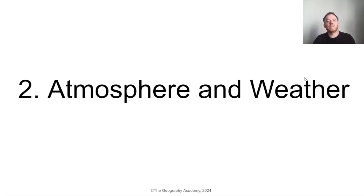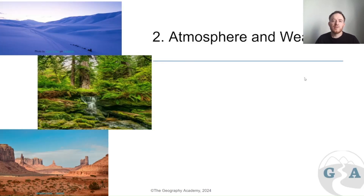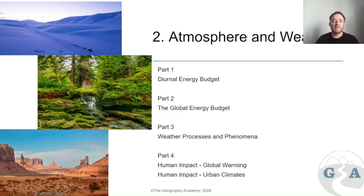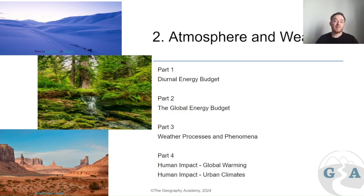This is atmosphere and weather. There are going to be four parts to this main unit: the diurnal energy budget, looking at all the energy that comes in and what happens to it through the sun; part two looking at the global energy budget; then weather processes and phenomena; and then climate change and urban climates as a micro-climate case study.